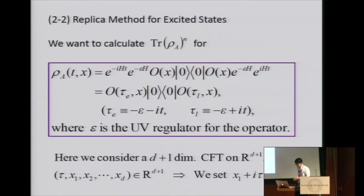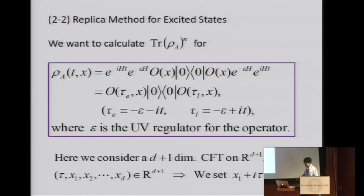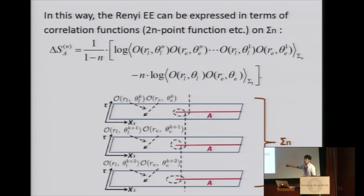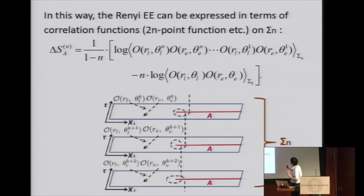So we start with the Euclidean formulation, compute everything in a Euclidean replica method, and in the end do the analytical continuation from Euclidean time to minus i*t. This corresponds to a retarded Green function. We consider a D+1 dimensional conformal field theory on R^{D+1}. We combine the Euclidean time and x_1 coordinates into a complex coordinate in polar form. What we find is that with N replicas, we insert the operator and its conjugate — the bra and ket — so each sheet has two operators and totally we have 2N operators inserted, giving a 2N-point function.